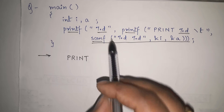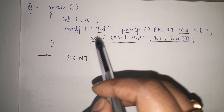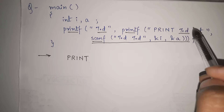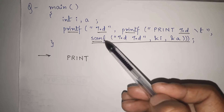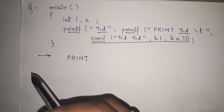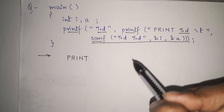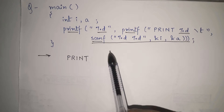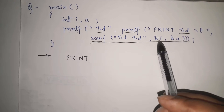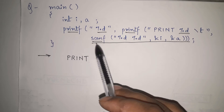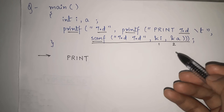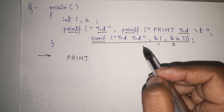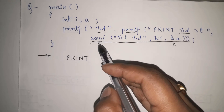Whenever we print the result of scanf, what it prints is the number of integers or characters that were scanned by that scanf. So the return value of scanf is the count of successfully scanned items. In this scanf, i and a are the two integers being scanned, so the count is two.